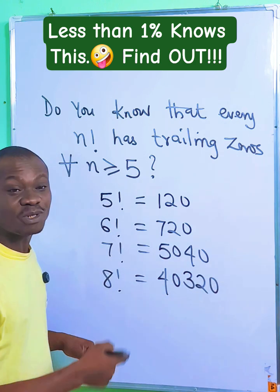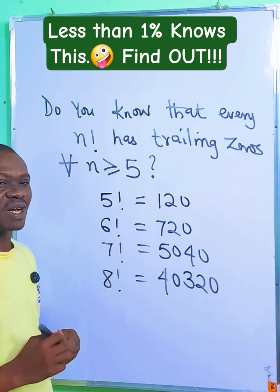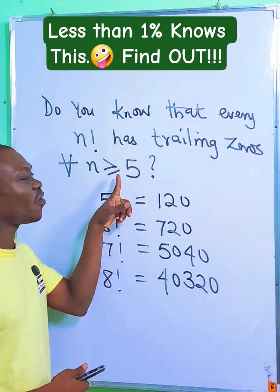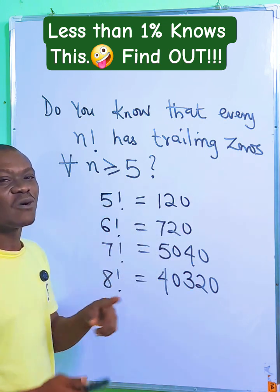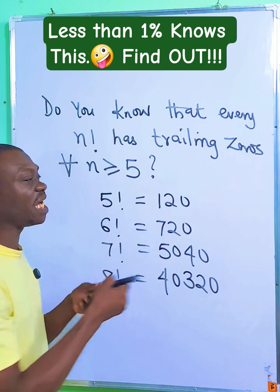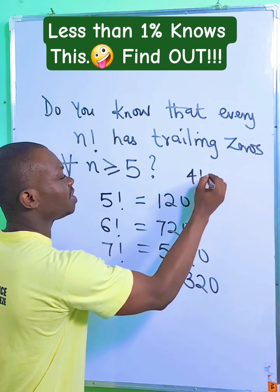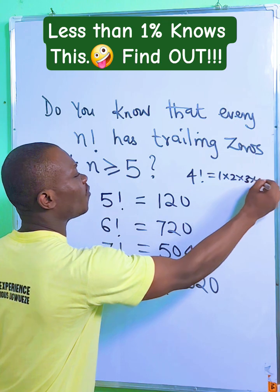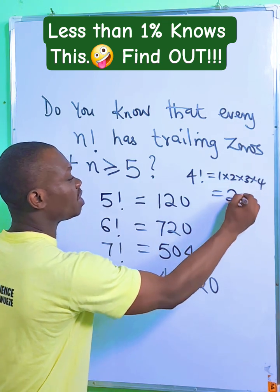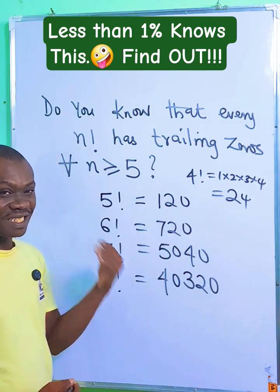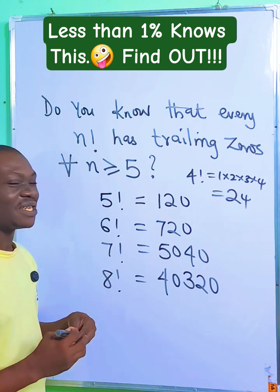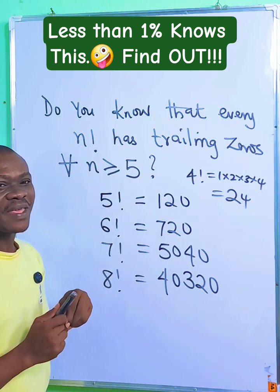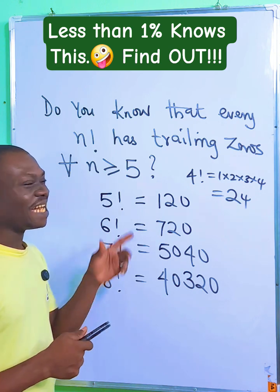Confirm all of this with your calculator. You'll see that every factorial from five up will always have a trailing zero. Of course, four factorial — which is one times two times three times four — equals 24, so from four down there are no trailing zeros. The question is: why is it so? I want you to think about it.